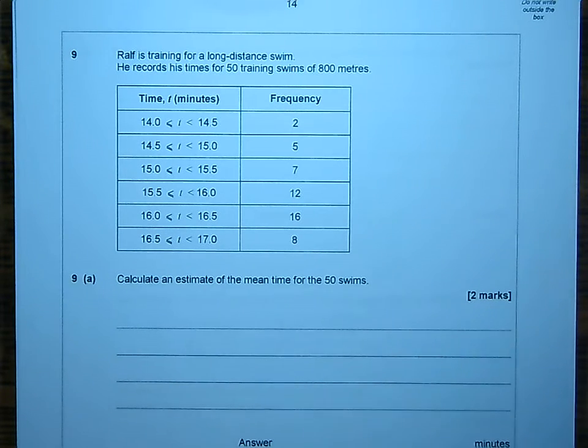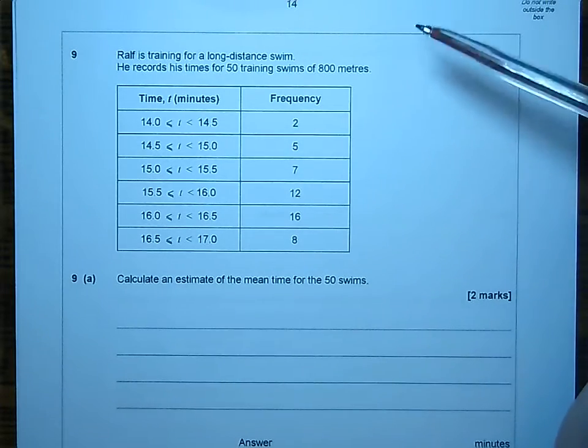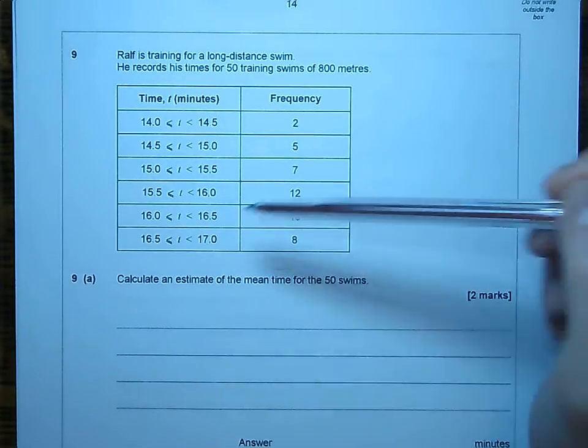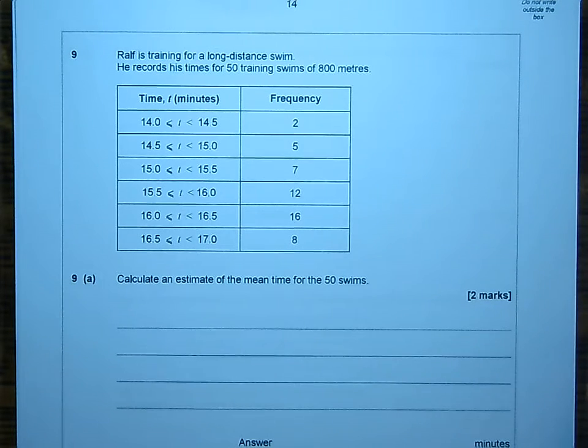Right, question 9. Ralph has got some data for us on his swimming times, and you can see those here. And we're asked to calculate a mean, or rather an estimate of the mean for these data.